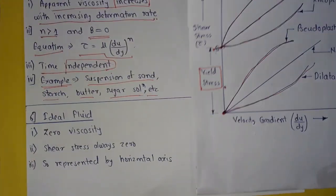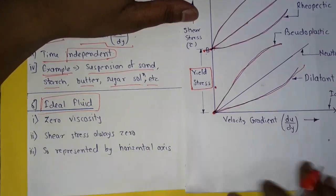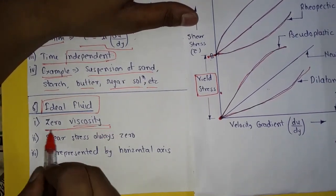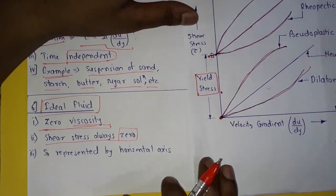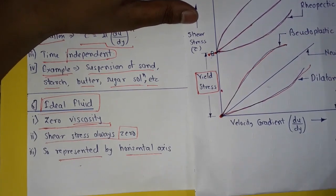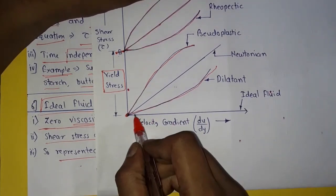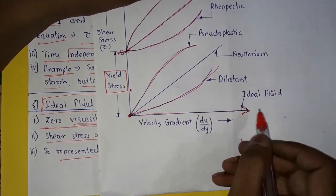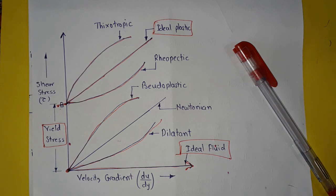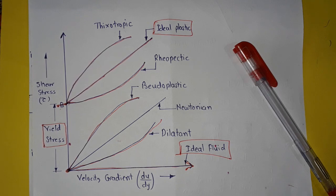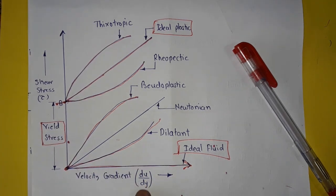The sixth type is ideal fluid. It has zero viscosity and its shear stress always remains zero. It is represented by the horizontal axis on the shear stress versus velocity gradient graph. So friends, in this video we have studied the difference between Newtonian fluid and non-Newtonian fluid, the types of non-Newtonian fluid with examples, and the representation of various fluids on the shear stress versus velocity gradient graph.